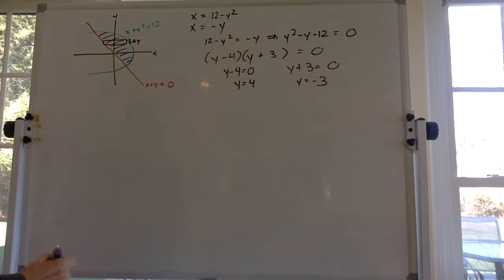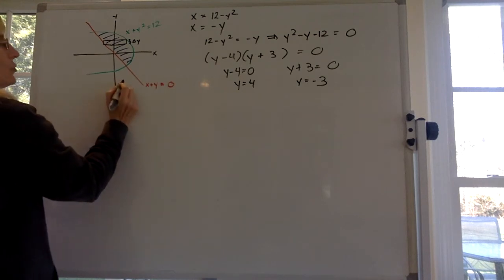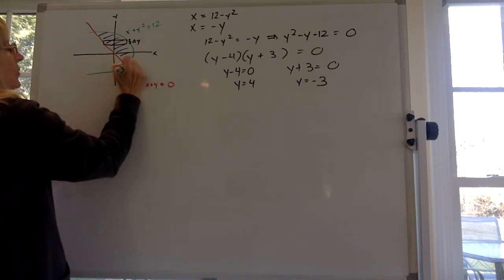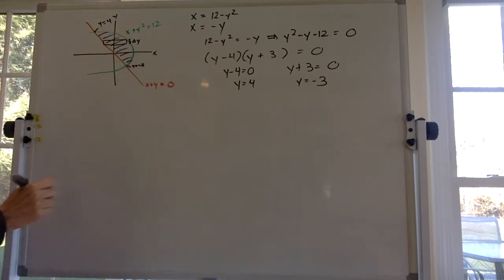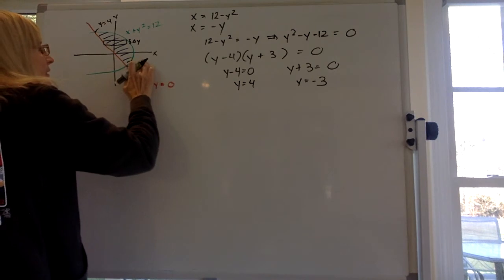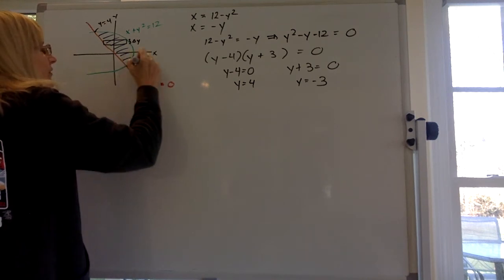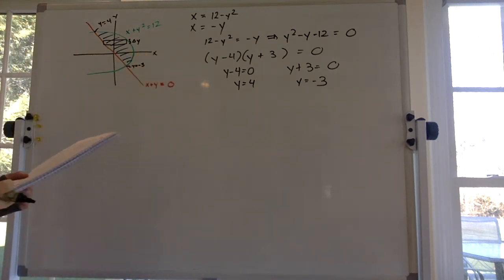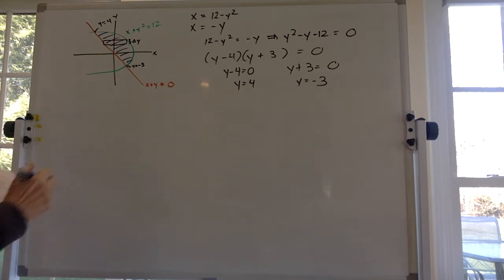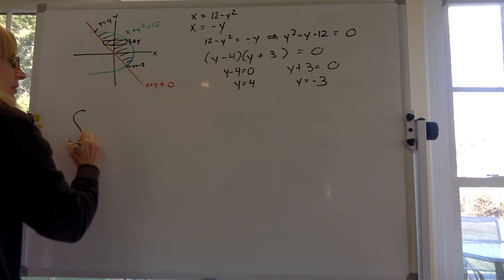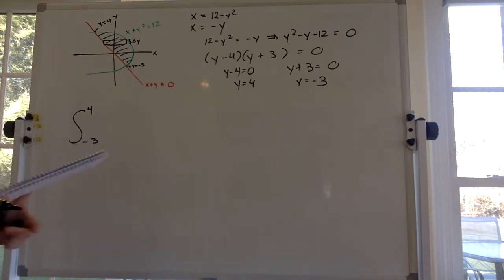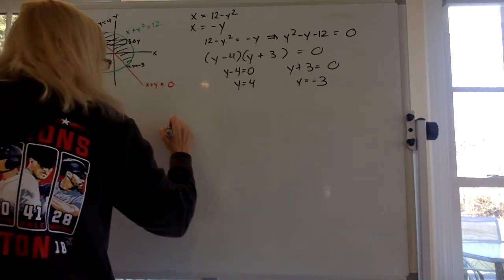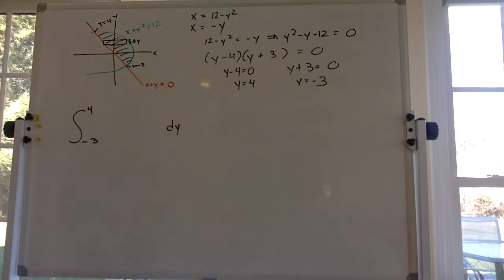So guess what you guys, we just found the y values. Right here y equals negative 3, right here y equals 4. We just figured that out, where the two intersect. Alright, so now what do we have to do? So now we have our limits of integration but now we got to figure out what we want to integrate and we know that we're gonna use dy. We're gonna integrate with respect to y.